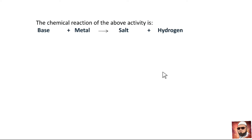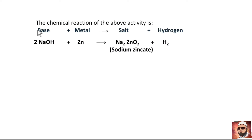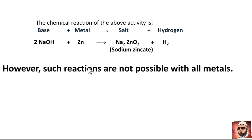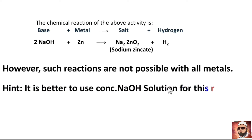The chemical reaction of this activity is: base plus metal gives salt plus hydrogen. The base is sodium hydroxide and the metal is zinc. When they react, hydrogen gas is released along with the salt sodium zincate. Note that this experiment works when you use concentrated sodium hydroxide, as such reactions are not possible for all metals.